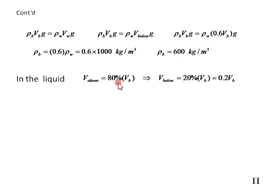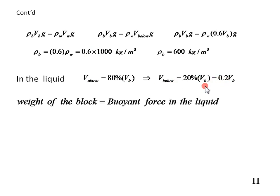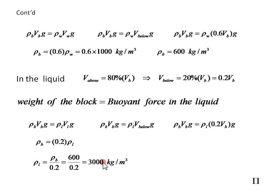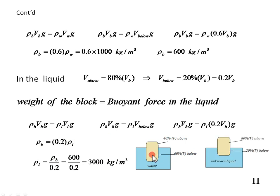In the liquid, the volume above is 80%, so the volume below is 20%. The weight of the block equals the buoyant force in the liquid: density of block times volume of block times G equals density of liquid times 0.2 V_B times G. This gives density of body equal to 0.2 times density of liquid, so density of liquid is 600 over 0.2, which is 3000 kilograms per cubic meter. The object floats deeper in water with 60% submerged, while only 20% is submerged in the liquid. The final result shows that the density of the liquid is greater than the density of water — this is a very important conclusion.